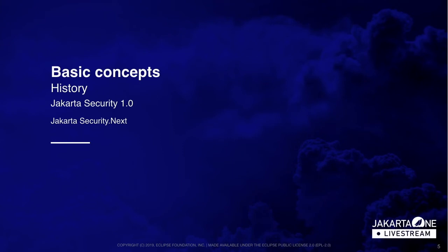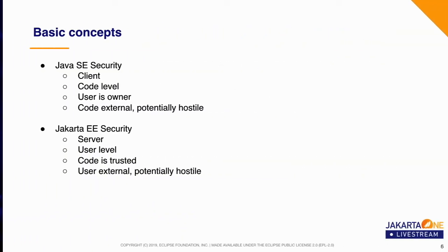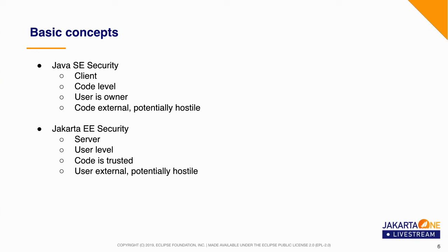Let's start with the basic concepts. In the context of this presentation, we mainly distinguish between two forms of Java Security: Java SE Security and Jakarta EE Security. Java SE Security is about securing a client, which is about code-level security, where the user is the owner and the code is external and potentially hostile. Jakarta EE Security is about securing a server, which means it's about user-level security, aka principal-based security, where the code is trusted and users are external and potentially hostile.